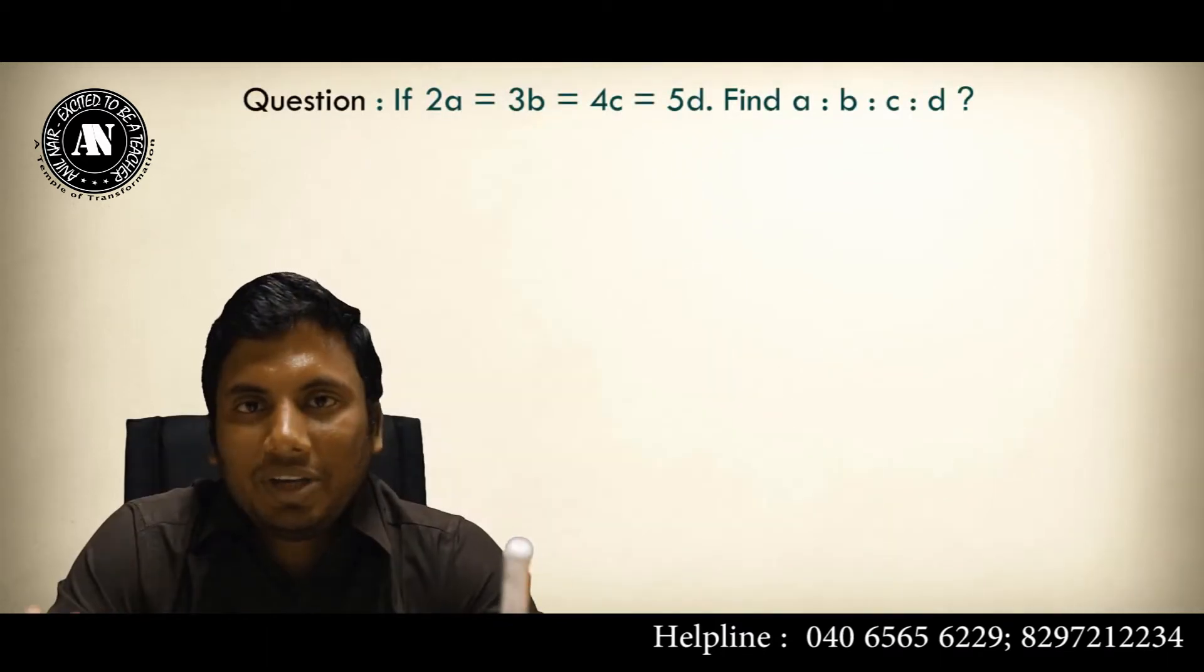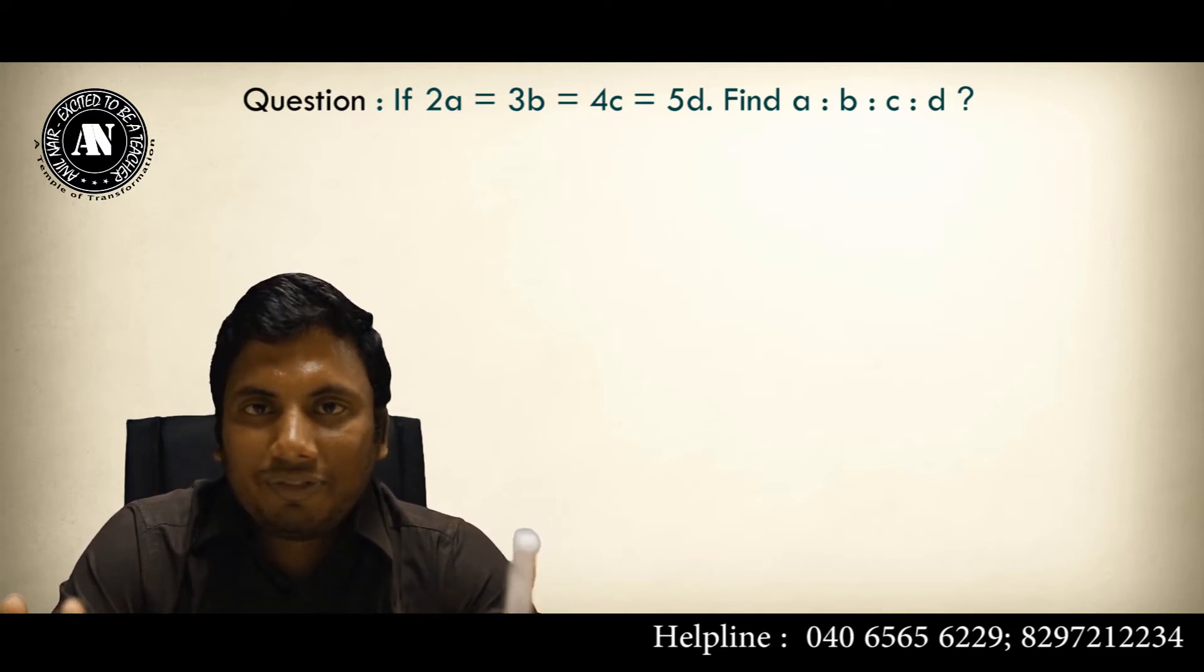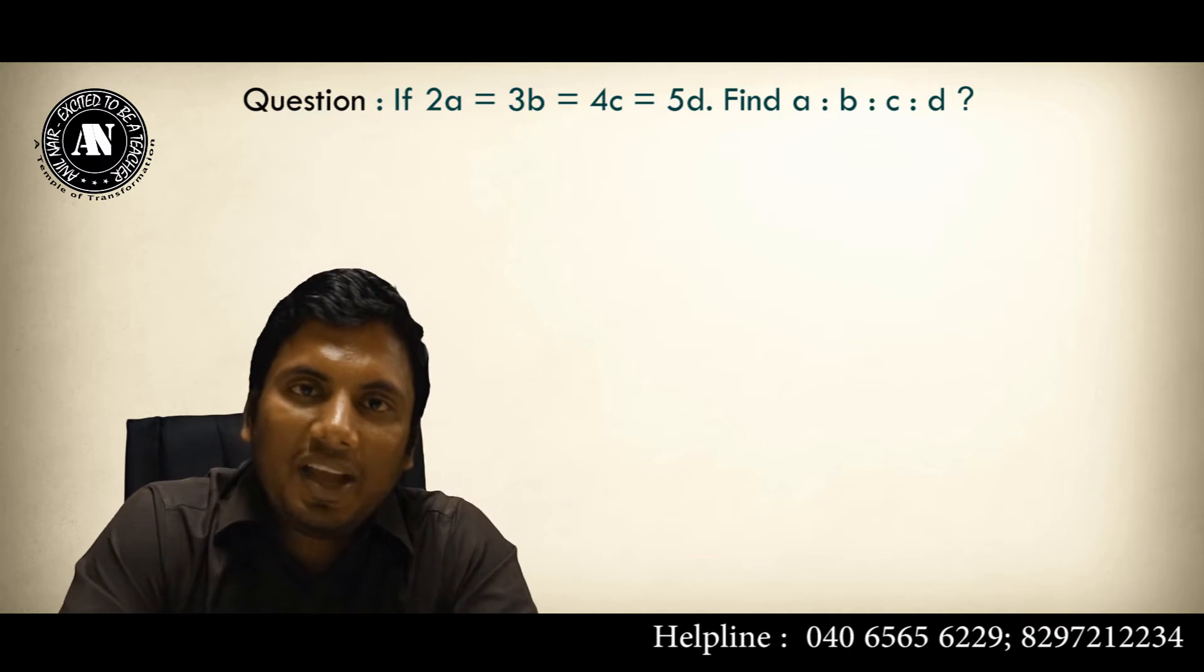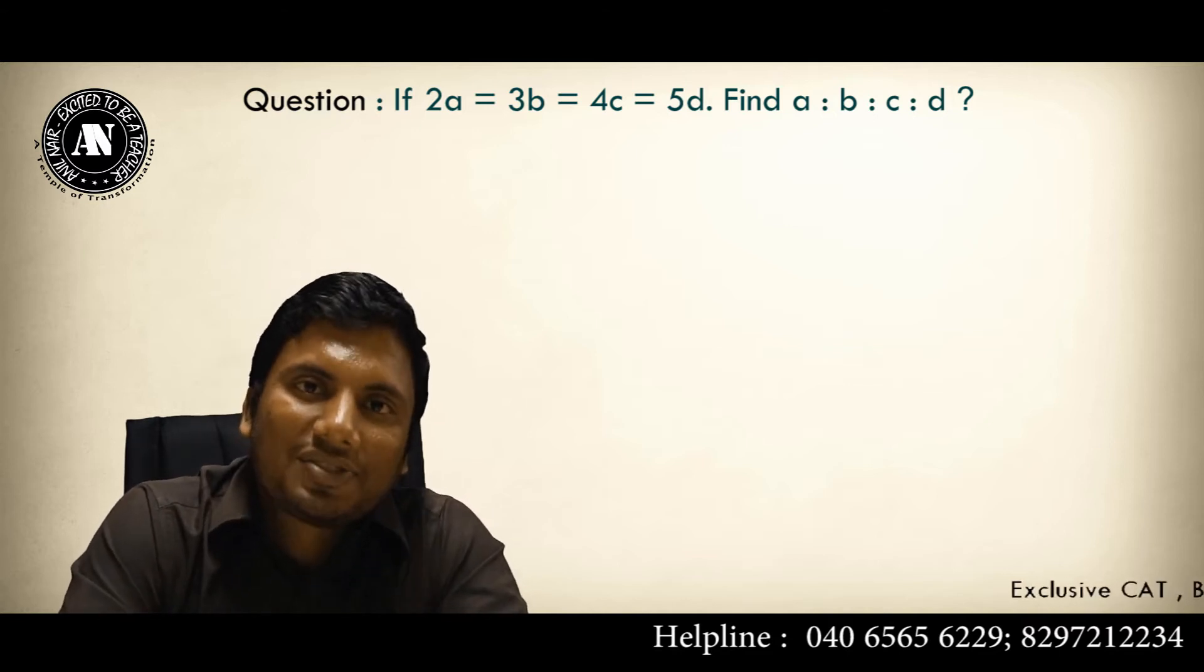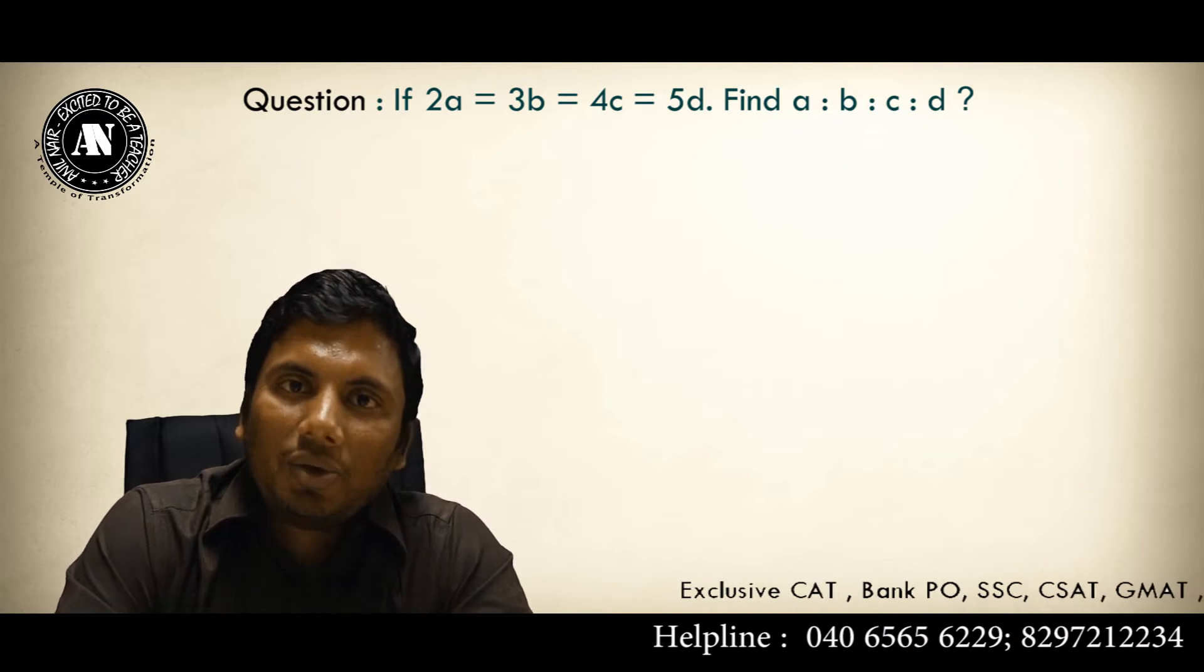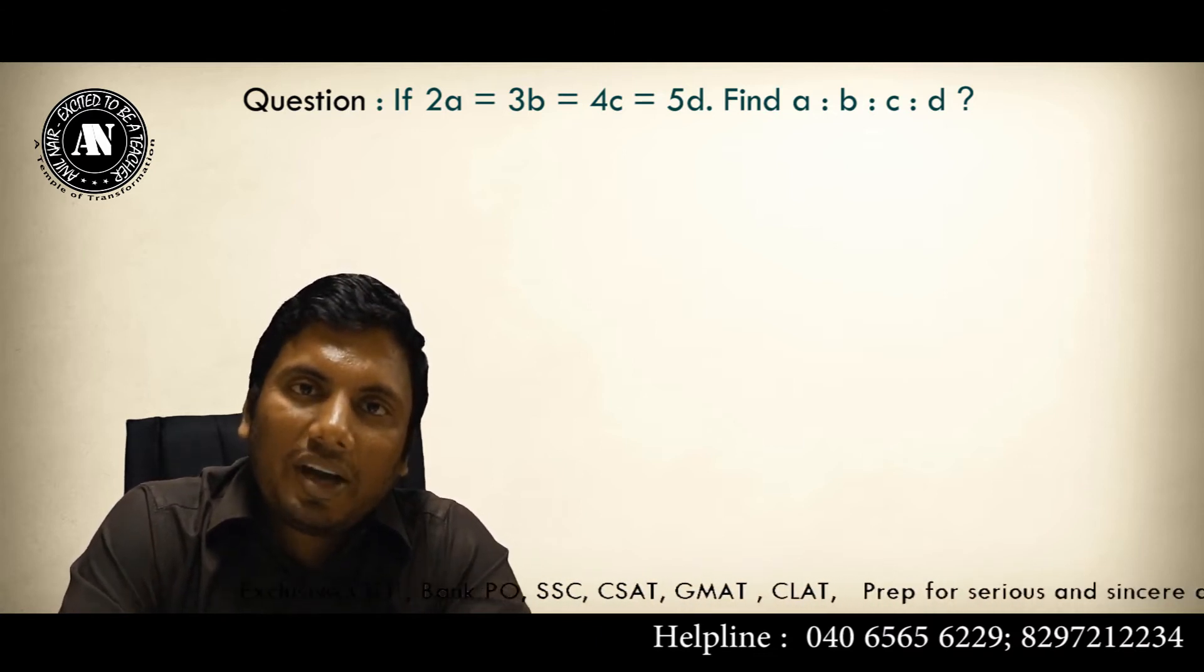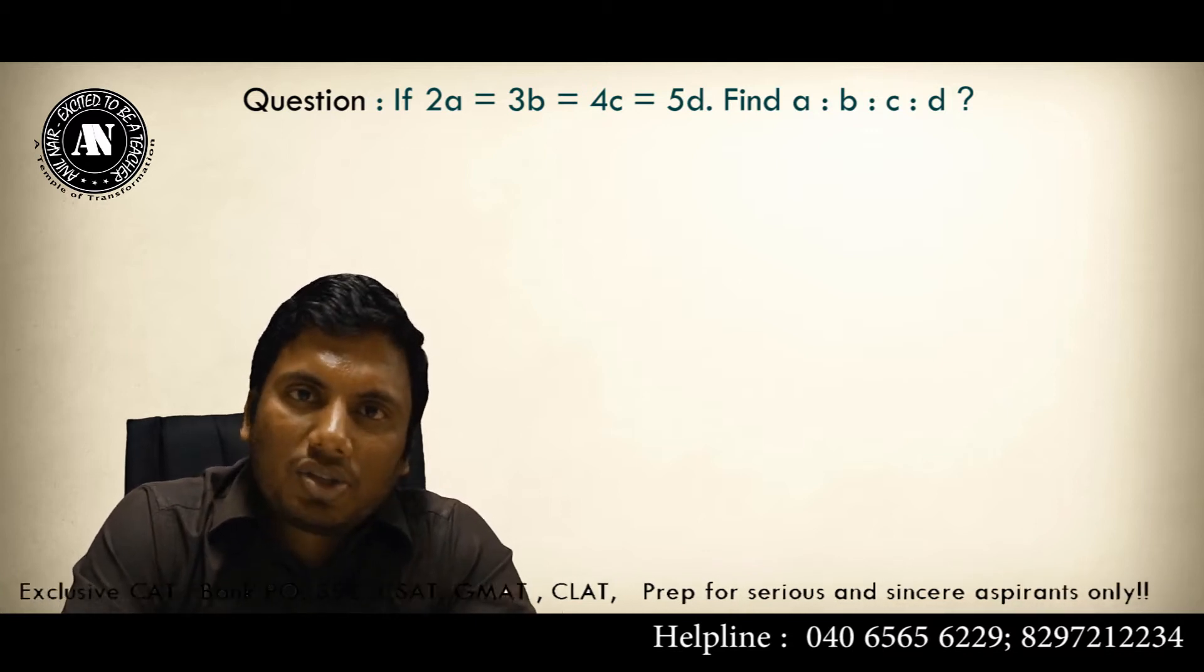Question, first question: if 2A equivalent to 3B equivalent to 4C equivalent to 5D, find A is to B is to C is to D. I have seen a lot of teachers, a lot of students solving it by taking the LCM of the coefficients and all that values. Now look at my simplest way to solve this question.